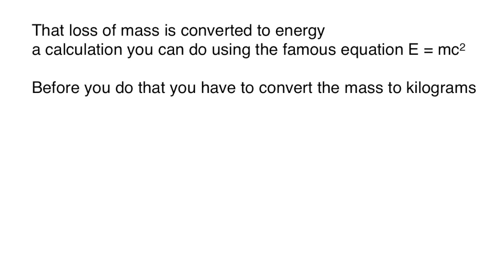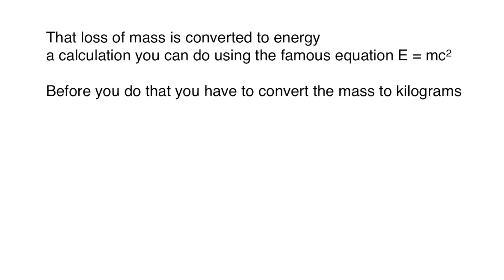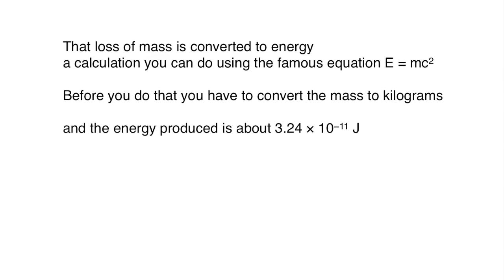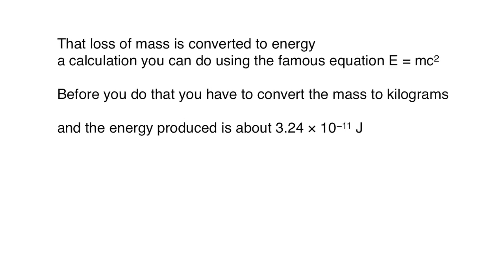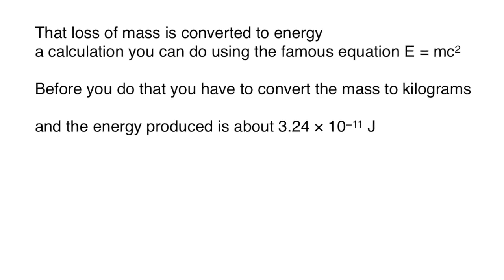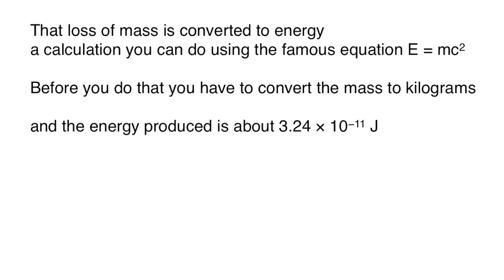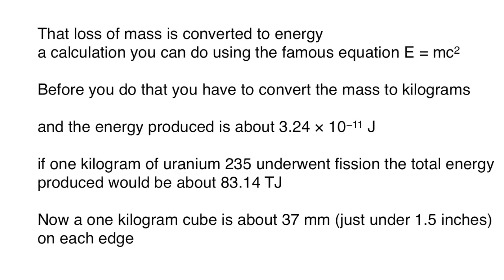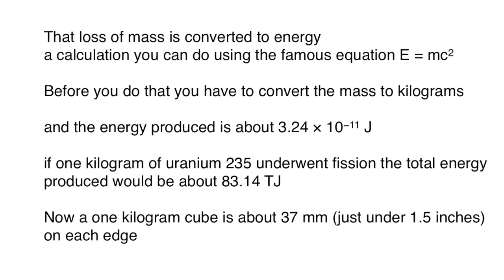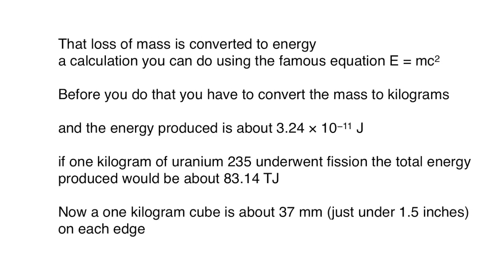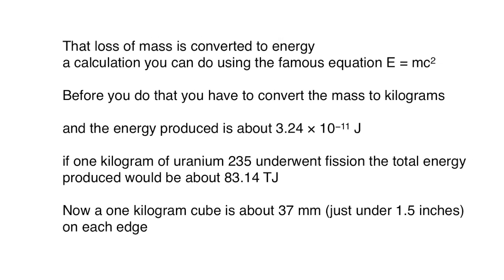Before you do that, you have to convert that mass into kilograms. It's a bit tedious to show the whole calculation here, but the energy produced from one atom splitting is about 3.24 × 10⁻¹¹ joules, which is a really tiny amount. But of course, in one kilogram of uranium, for example, there are an enormous number of atoms. And if all of them were to undergo fission, they would produce 83.14 terajoules.